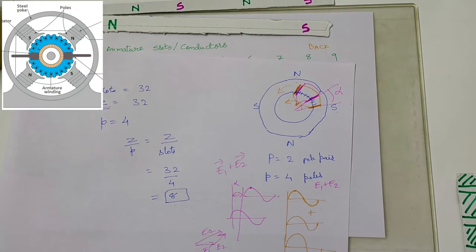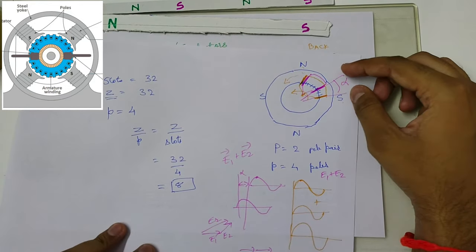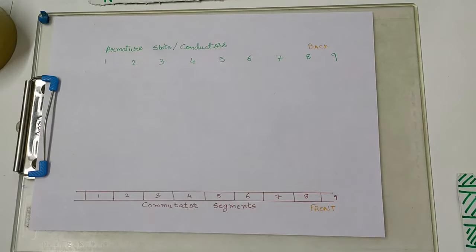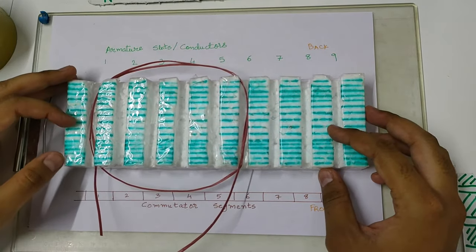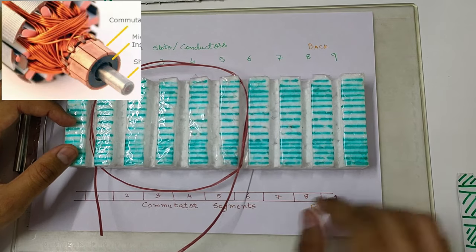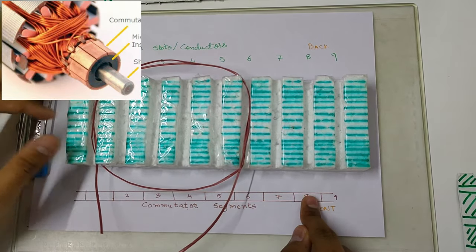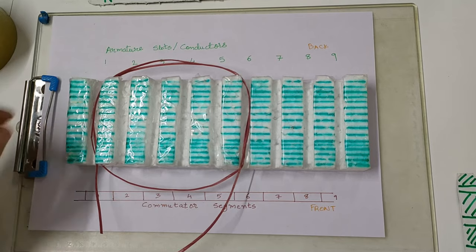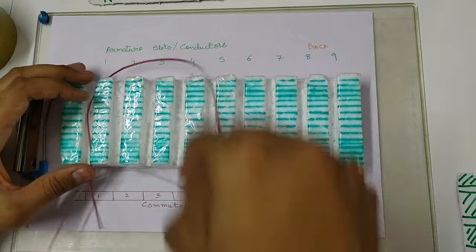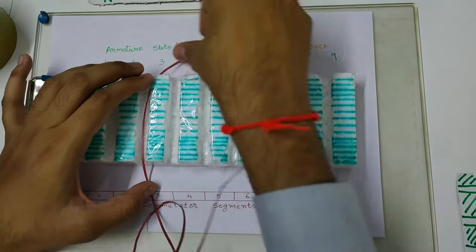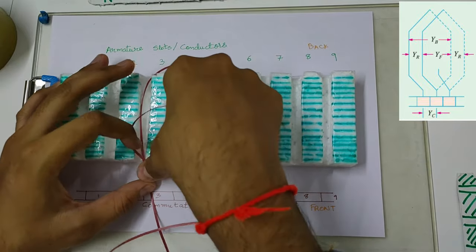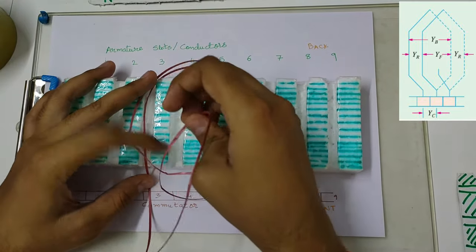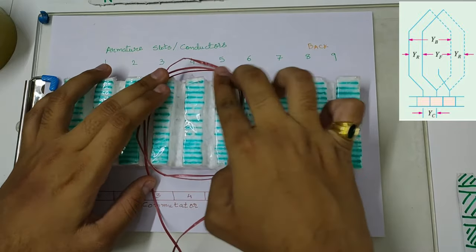This is the effect of having a short pitched winding. Now, the number of commutator segments is always equal to the number of coils in an armature winding. Basically, there are two types of armature winding in DC machines. First is called lap winding — if I wind the coil which keeps looping over like this, then it is called a lap winding. This is an example of a lap winding.